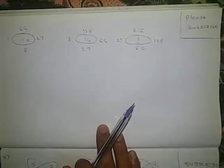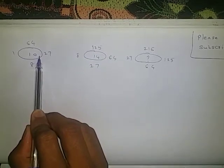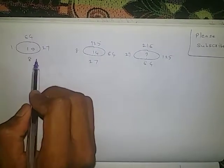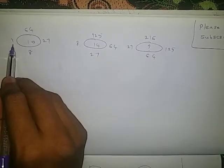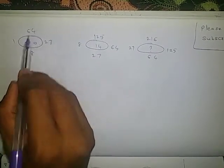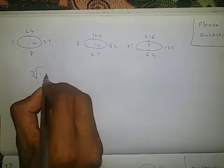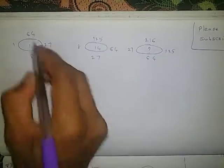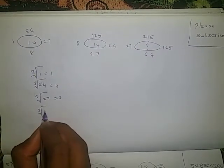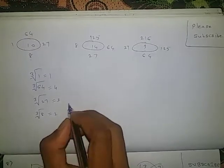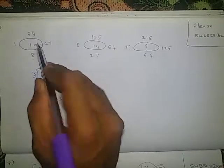Next, look at one more question. 1, 64, 27, 8 — middle number is 10. If we observe these outer numbers, those are all perfect cubes: 1 cube is 1, 4 cube is 64, 3 cube is 27, 2 cube is 8. Cube root of 1 is 1, cube root of 64 is 4, cube root of 27 is 3, cube root of 8 is 2. Adding: 1 plus 4 plus 3 plus 2 is 10 — that is the middle number.